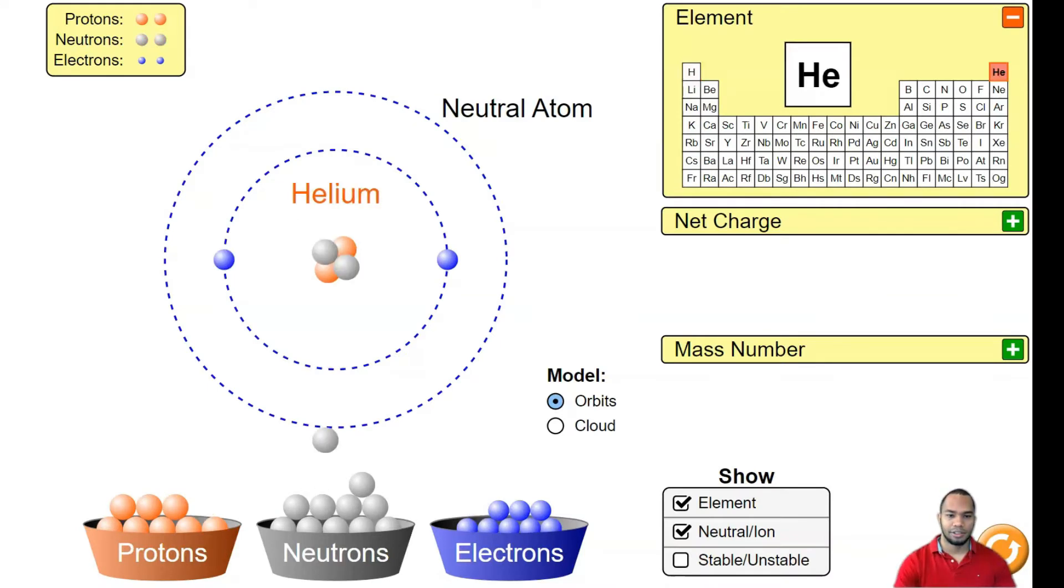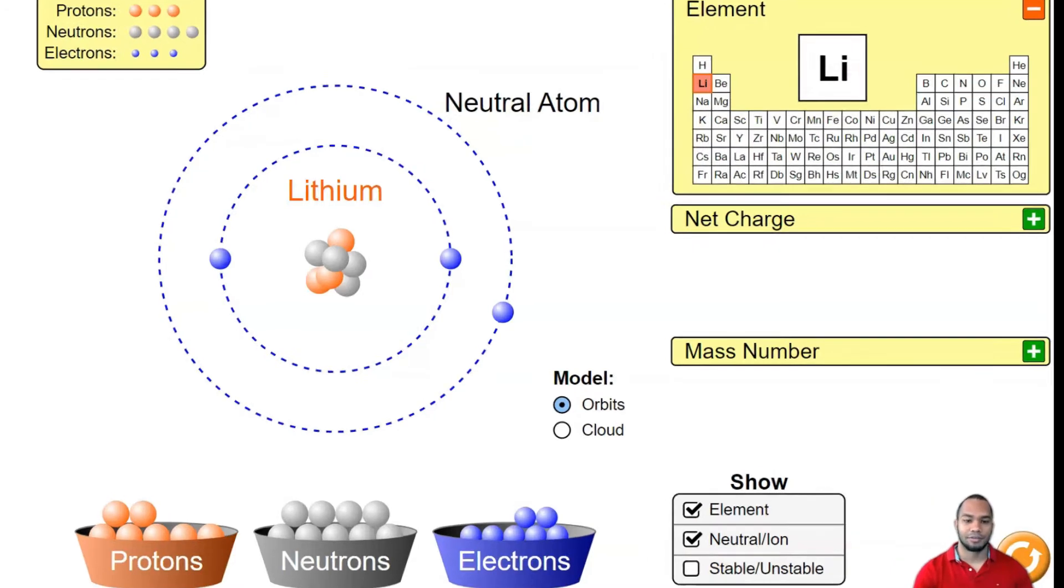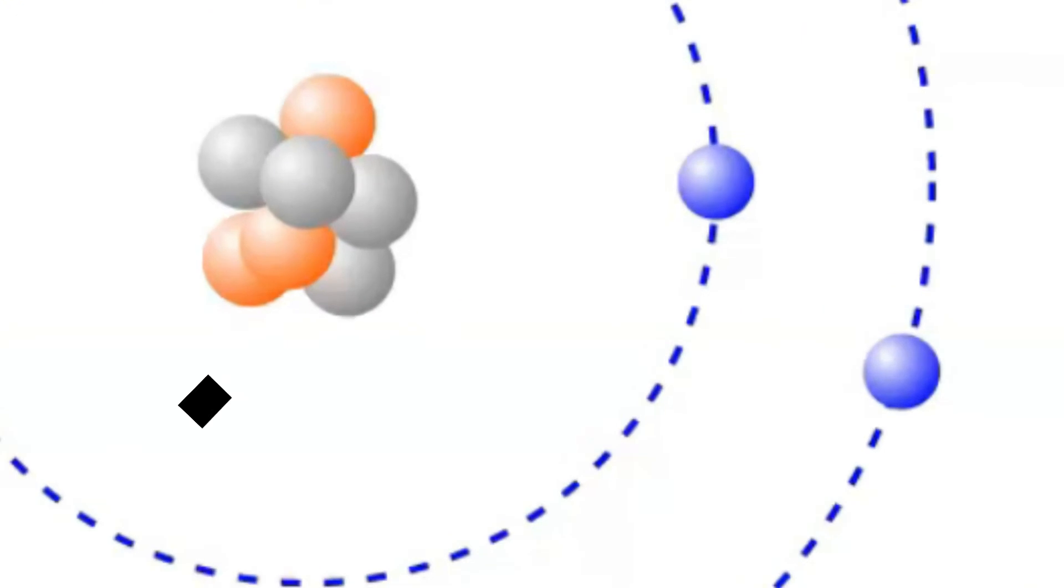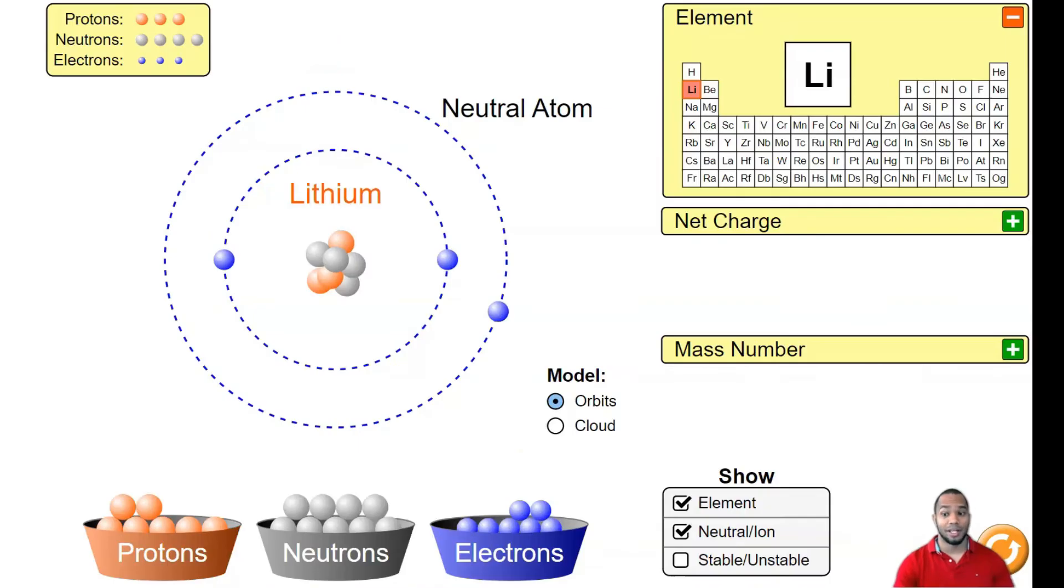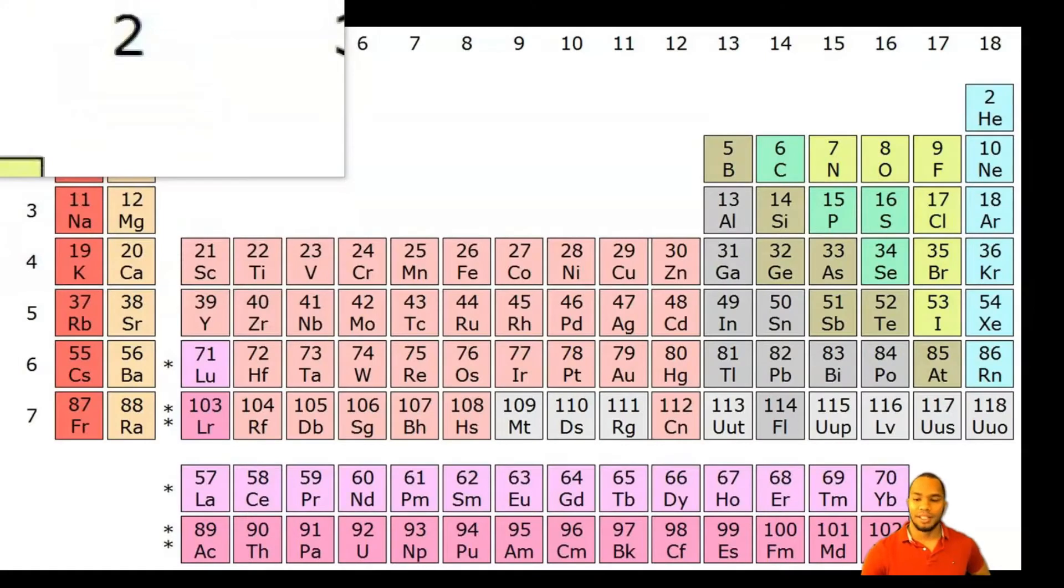Let's continue and build lithium. With lithium, notice how many valence electrons does lithium have? It only has one electron in its outer shell. That's why it's in group one.